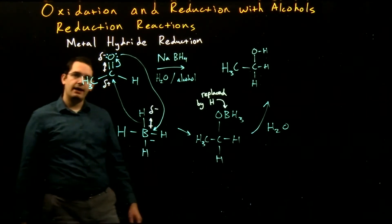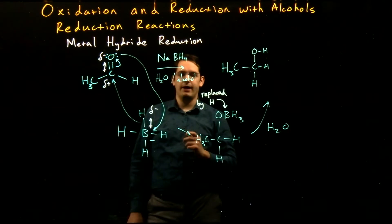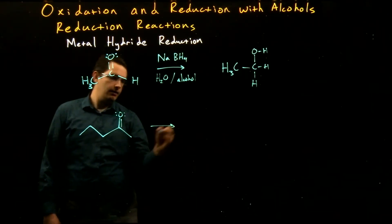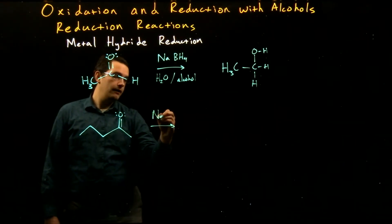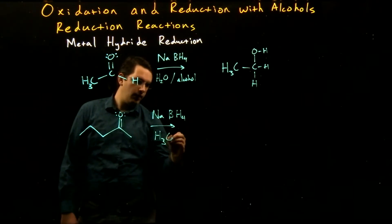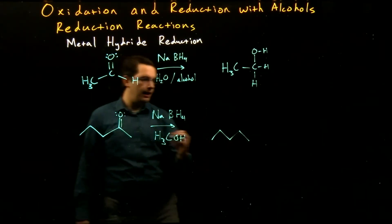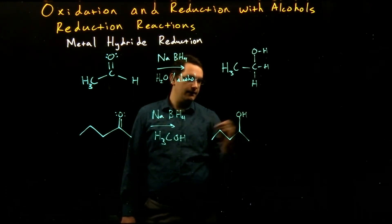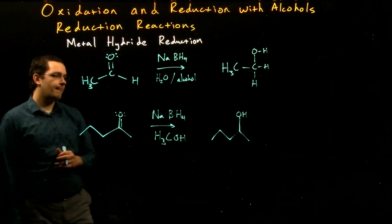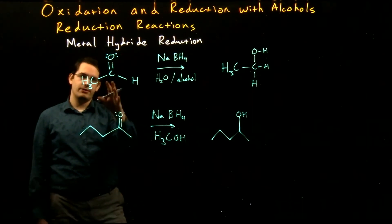Again, notice the similarities to the nucleophilic attack of organometallic compounds: the nucleophile attacks the electrophilic carbonyl carbon, electrons move up to the oxygen, and then the oxygen is protonated to give our final alcohol product. Metal hydride reduction can also be applied to ketones — reacting a ketone with sodium borohydride in methanol (or any alcohol or water) adds two hydrogens and produces a secondary alcohol, since we started from a ketone with two carbons on either side of the carbonyl carbon.